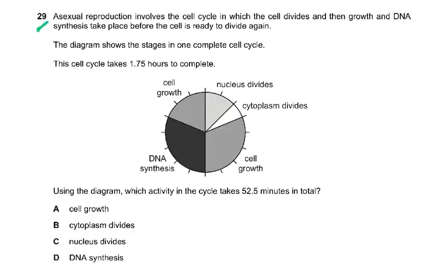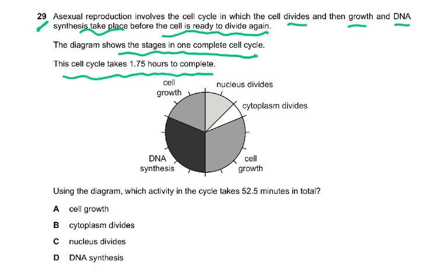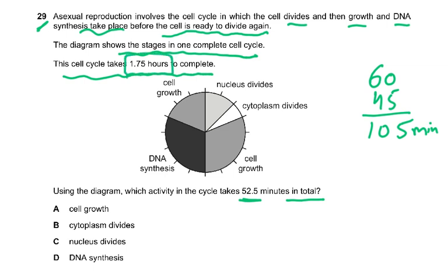Question number 29: Asexual reproduction involves a cell cycle in which the cell divides, then growth and DNA synthesis take place before the cell is ready to divide again. The diagram shows the stages in one complete cell cycle. This cycle takes 1.75 hours to complete. Which activity takes 52.5 minutes in total? 1.75 hours is 105 minutes, and 52.5 is nearly half of it — so the answer is cell growth.